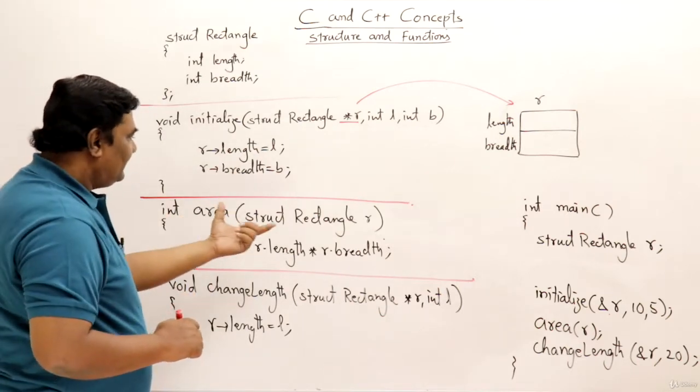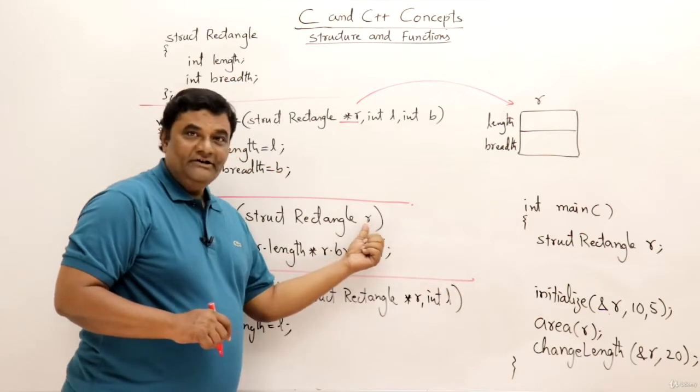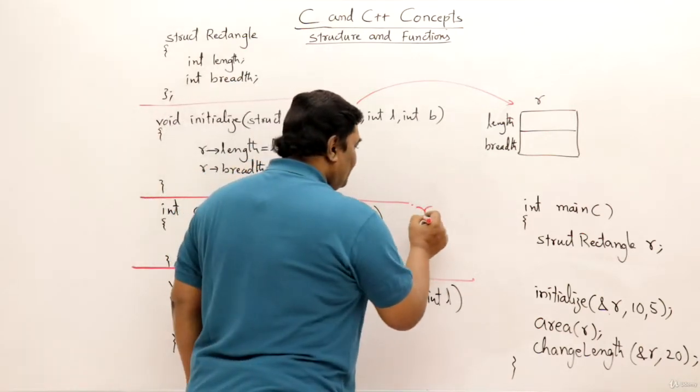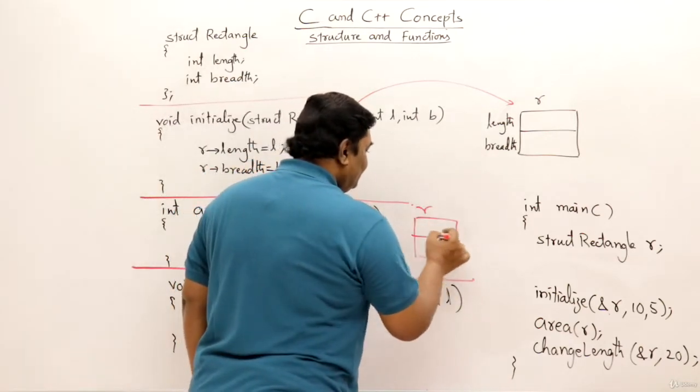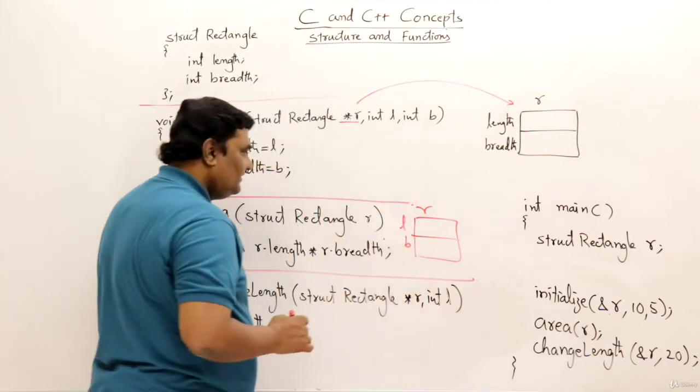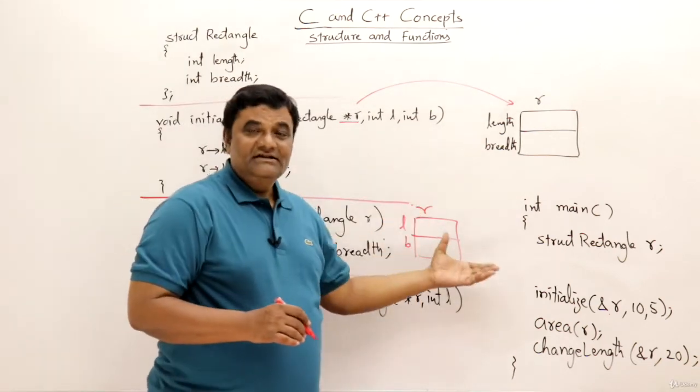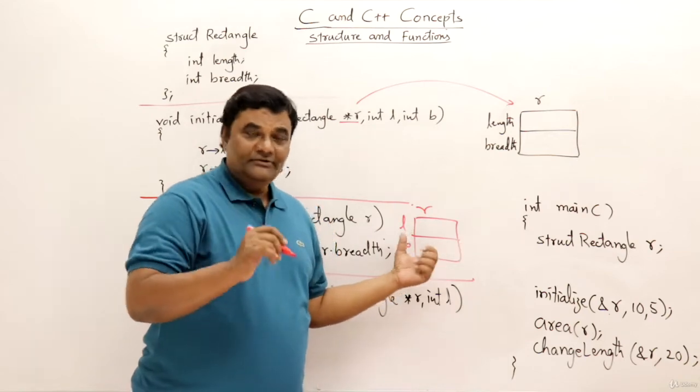Then this is area function. This is taking called by value. So it will have its own copy of rectangle containing length and breadth. So this will not directly access that one. This will have its own copy. This is called by value.